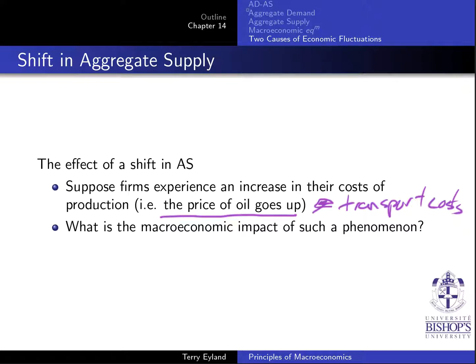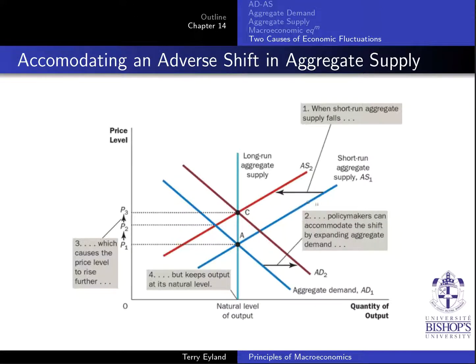What is the macroeconomic impact of such a phenomenon? An increase in the price of oil has an adverse effect on aggregate supply, so the aggregate supply curve shifts left. This is our initial impact: we were at point A and we're moving to point B.